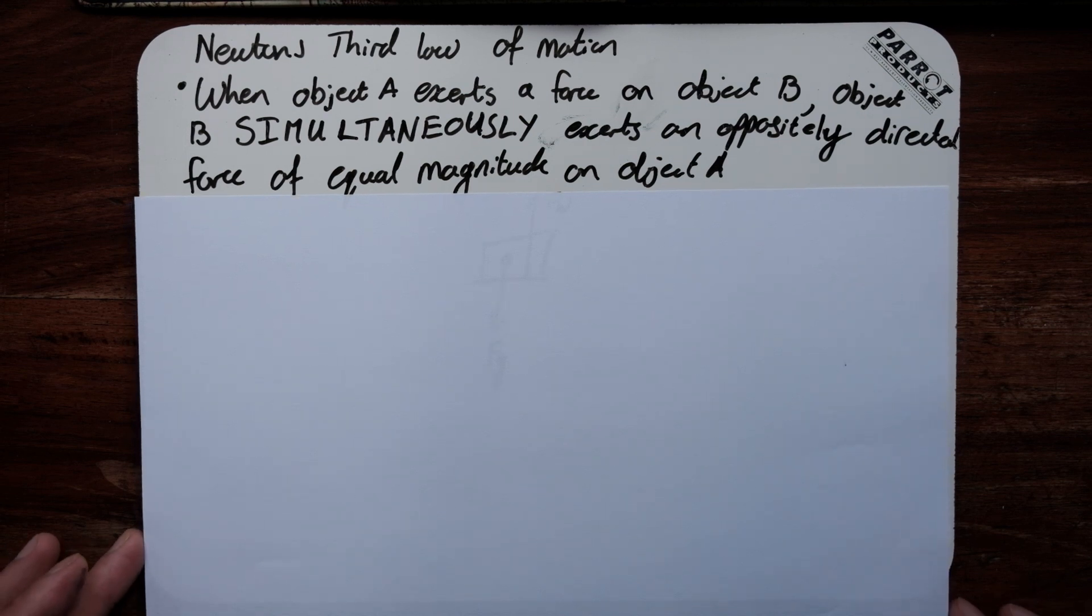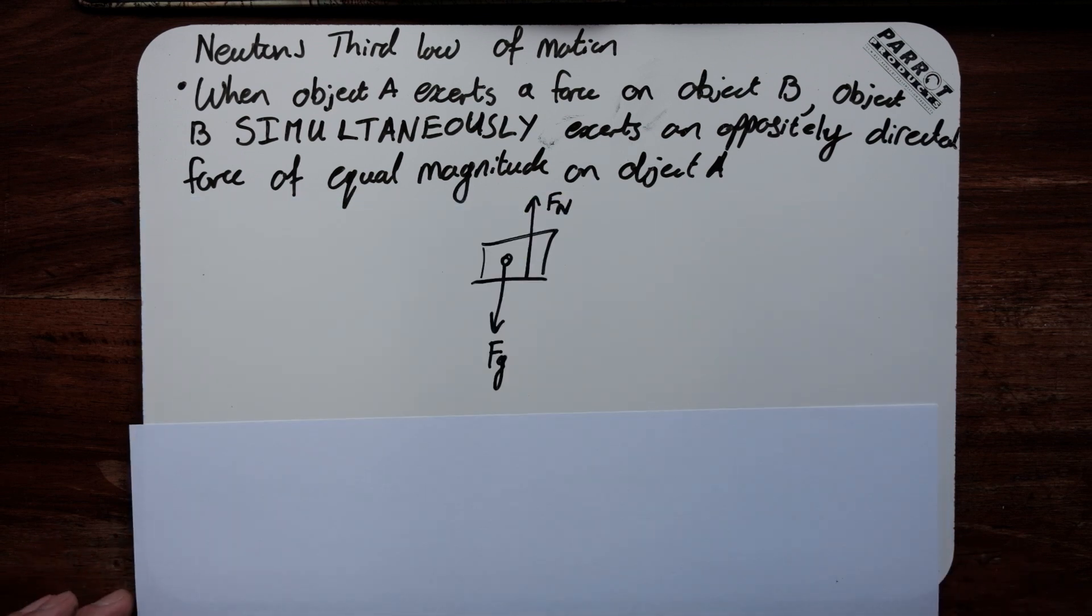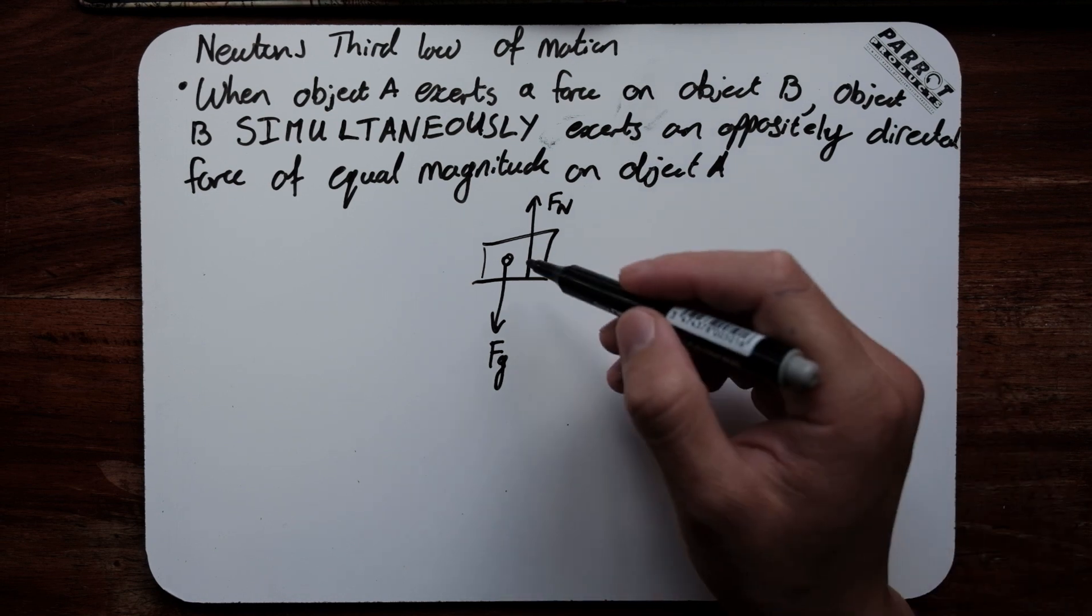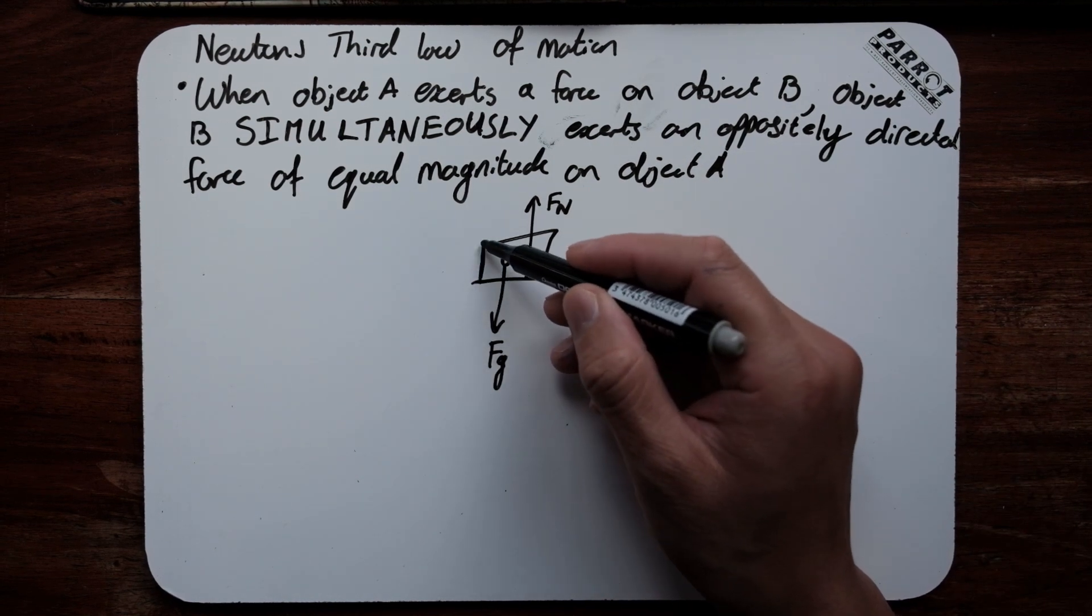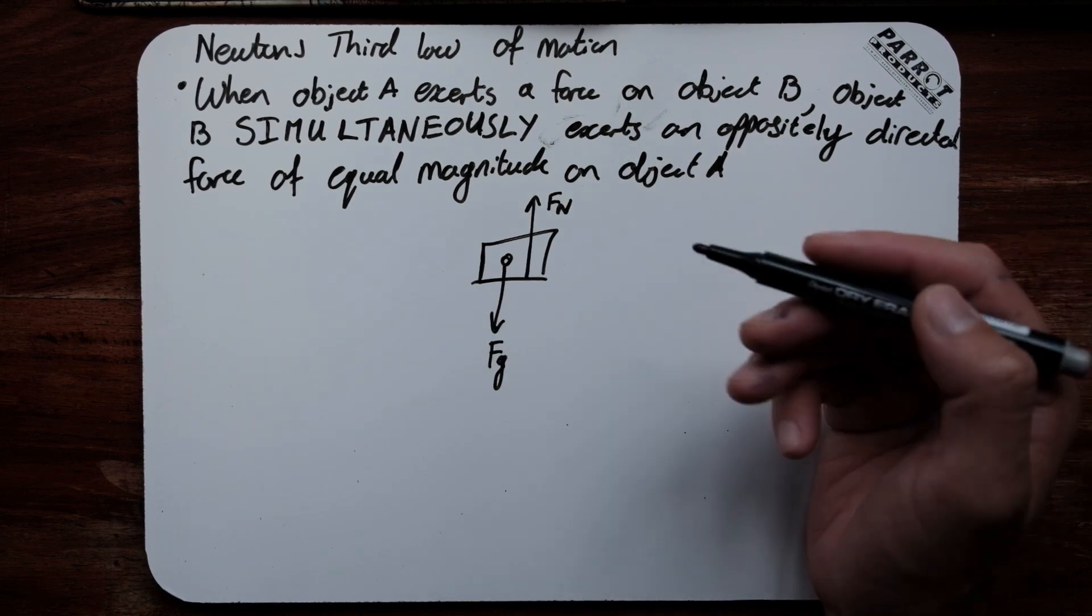We've actually been using this theory for the majority of our lessons already in the term of force of gravity and the normal force. If we take the force of gravity and the normal force, the force of gravity is the gravitational acceleration that the earth is exerting upon the object, creating a force which goes down.